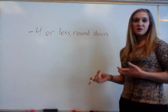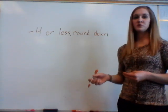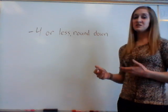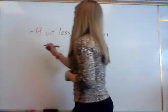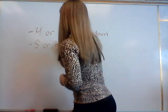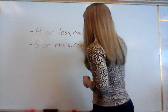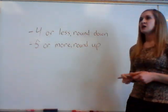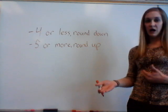Rounding down actually means the number is going to stay the same. So for example, if the number was a three, it's going to stay as a three — it's not going to go down to two. The second rule is if it's five or more, we round up. So if the number to the right is a seven, we're going to round the number up.